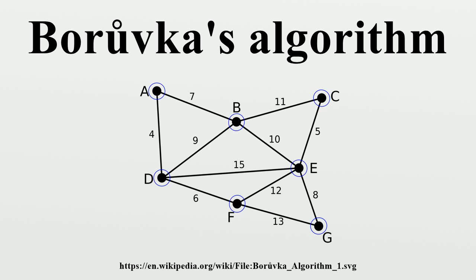A faster randomized minimum spanning tree algorithm based in part on Borůvka's algorithm, due to Karger, Klein, and Tarjan, runs in expected O(E) time. The best-known deterministic minimum spanning tree algorithm by Bernard Chazelle is also based in part on Borůvka's and runs in O(E alpha(V)) time, where alpha is the inverse of the Ackermann function. These randomized and deterministic algorithms combine steps of Borůvka's algorithm, reducing the number of components that remain to be connected, with steps of a different type that reduce the number of edges between pairs of components.